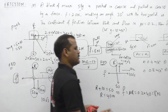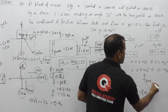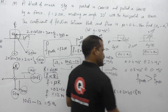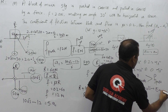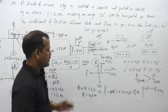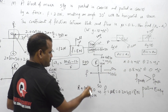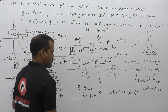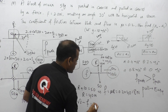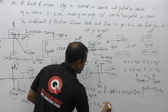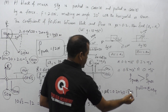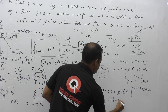Since frictional force in pushing (12N) is greater than in pulling (8N), pulling is easier than pushing. For acceleration A2 in the pulling case, applying horizontal equilibrium: 10√3 − 8 = 5 × A2, so A2 = (10√3 − 8) / 5.